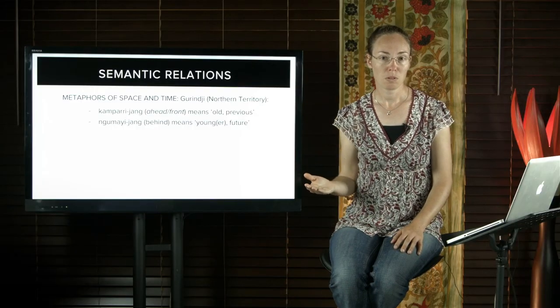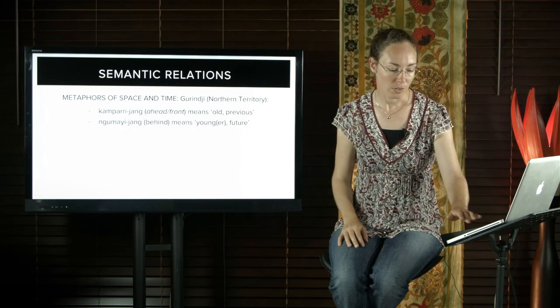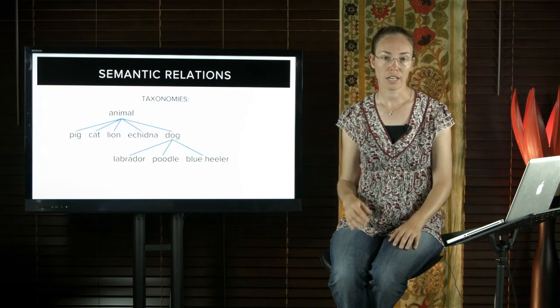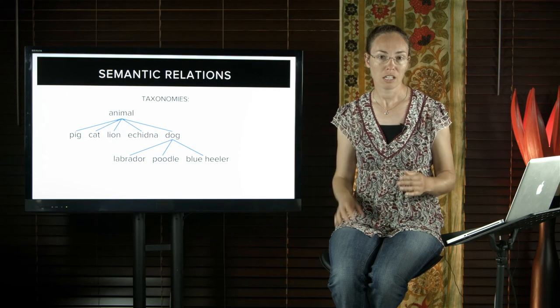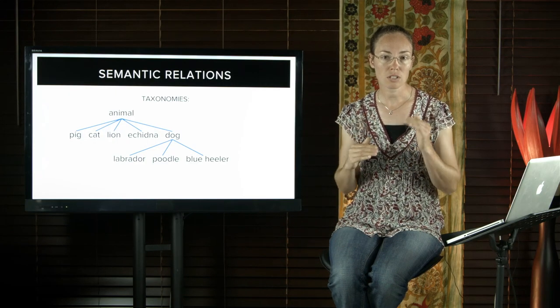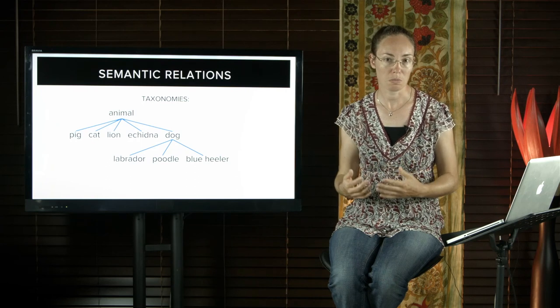A word can be a hyponym of one word but the superordinate of another. For example, in this slide here you can see that dog is a hyponym of animal but it is itself the superordinate for labrador, poodle, blue heeler, and so forth. As you can see, word meanings form complex hierarchical sets of relations called taxonomies.